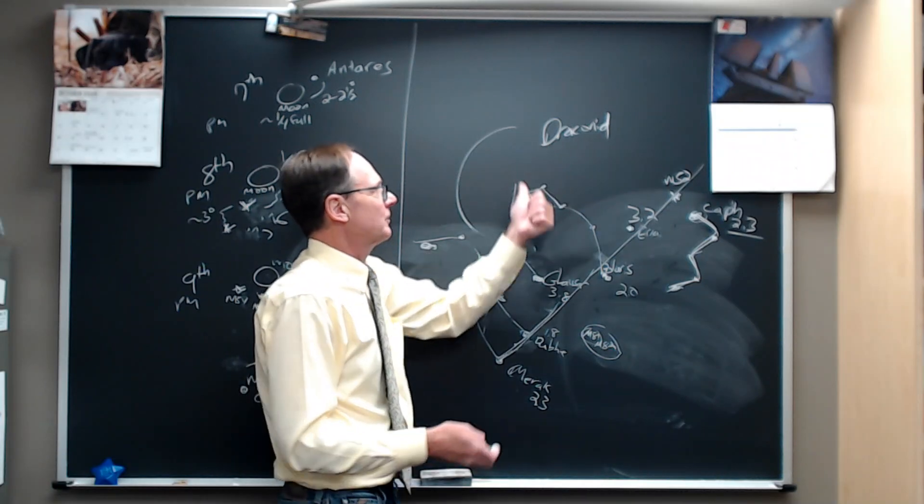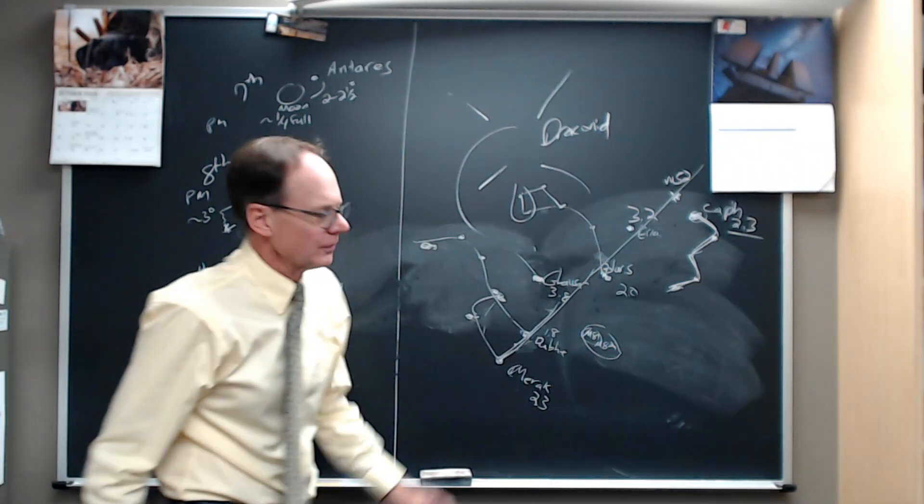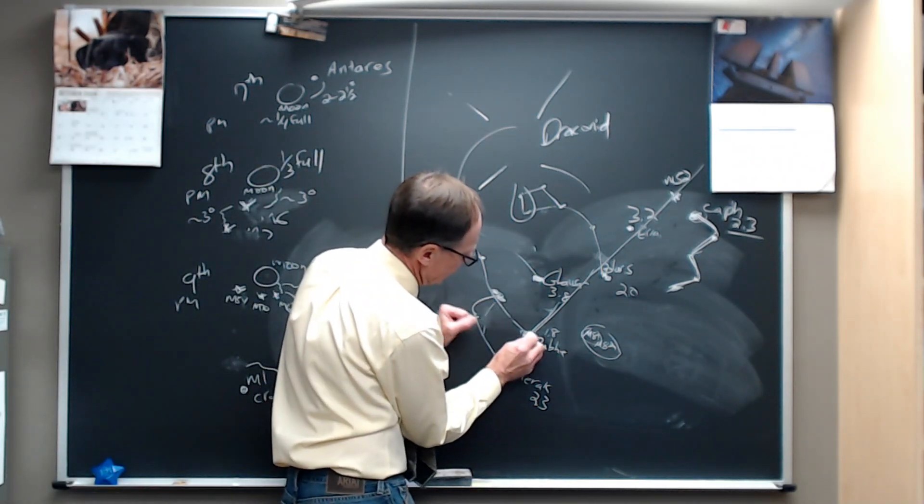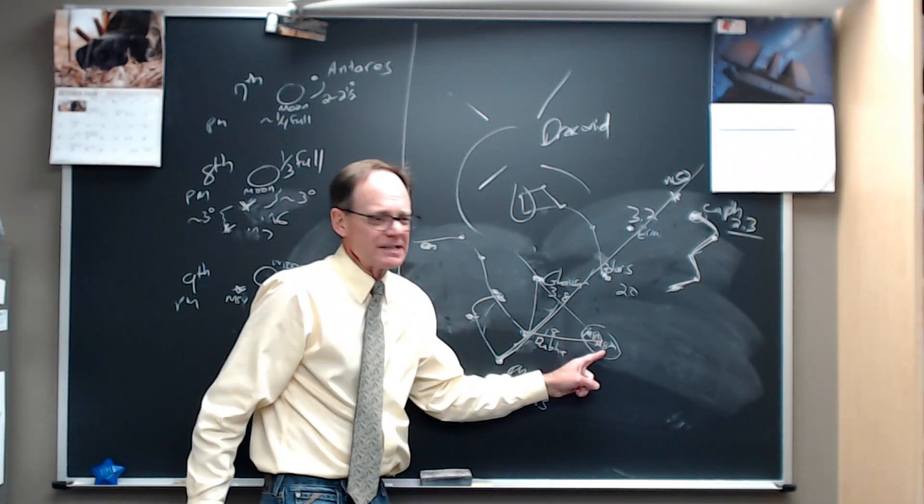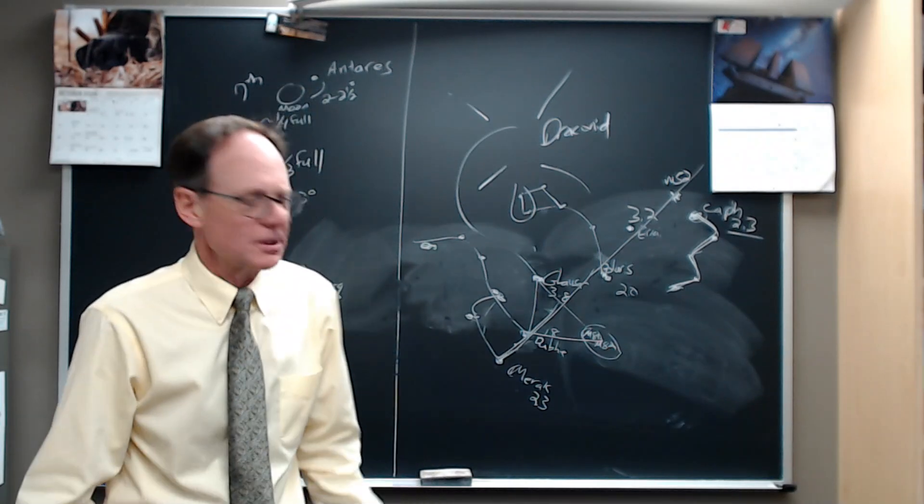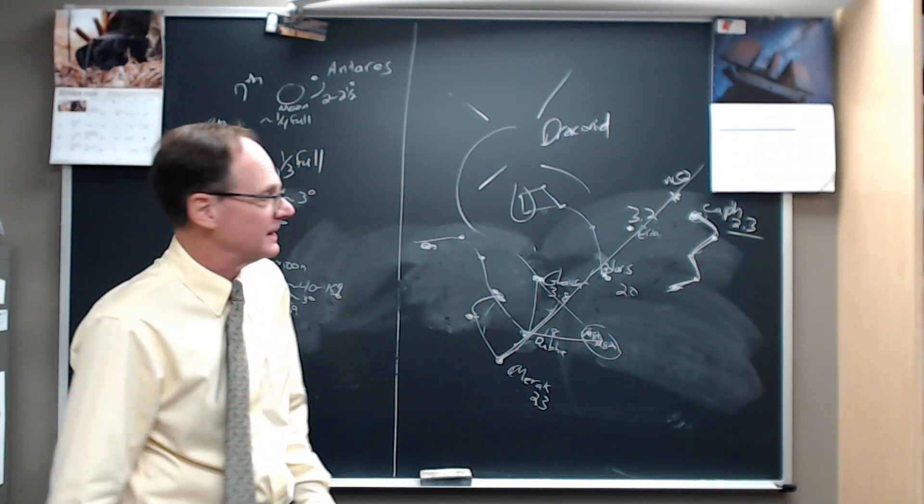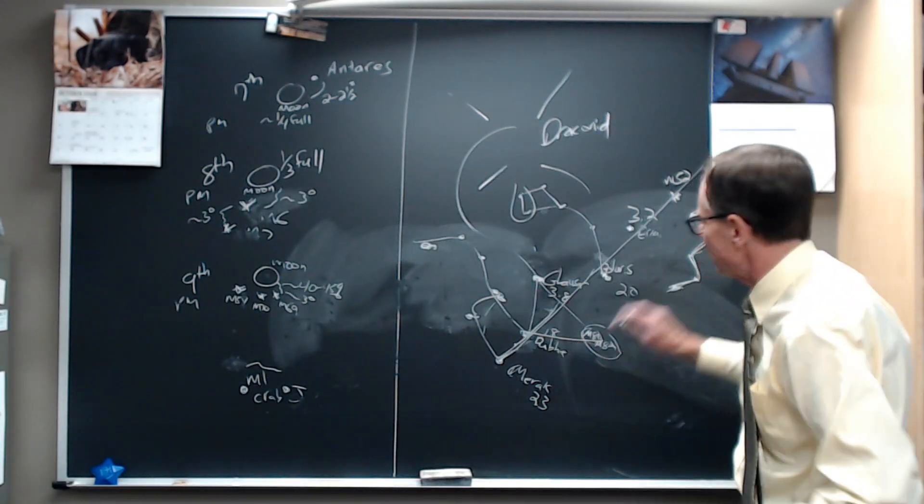But if we go the other direction, if we make a triangle from Dubhe to Glousar down this direction like that, you come to galaxies M81, M82. They're pretty darn good galaxies for a small telescope. If you've got a small telescope, see if you can find those. I recommend them highly. They're close to the horizon in the evening. But by the morning, this whole thing has shifted and rotated around.